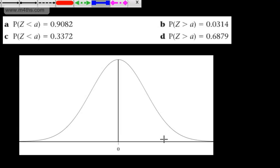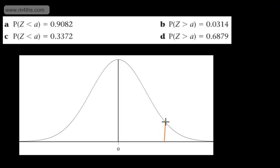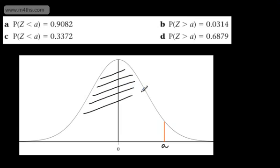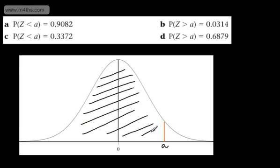So let's do a little sketch. I'm going to put a line up here, and this line is going to be the value A. We know that the area trapped under the curve to the left of this line is given as 0.9082. So this right here is the area trapped under the curve, or the probability. Another way of reading this now is phi of A is equal to 0.9082.